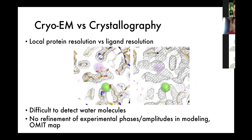Additionally, it can be quite difficult to detect things like water molecules or tell the difference between a water molecule and just noise in the map. You also can't use some of the tricks available in crystallography for modeling ligands — since in cryo-EM you're measuring experimentally both phases and amplitudes, you're not really generating things like the omit map to help you model ligands into density.